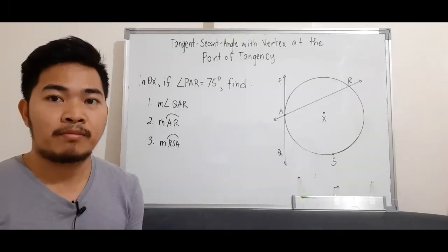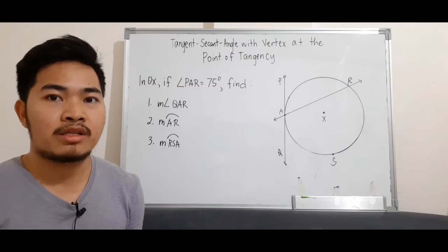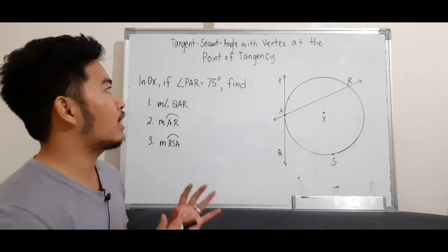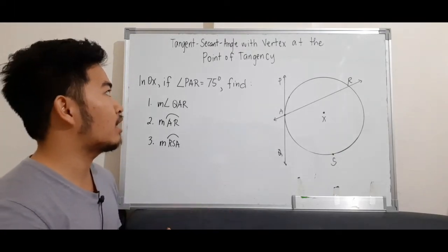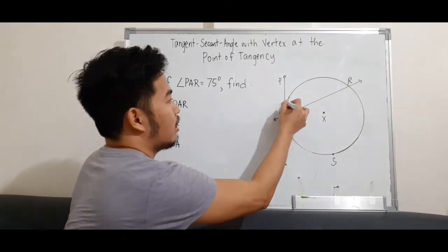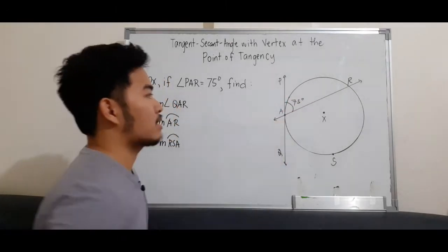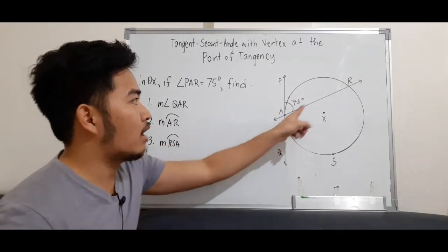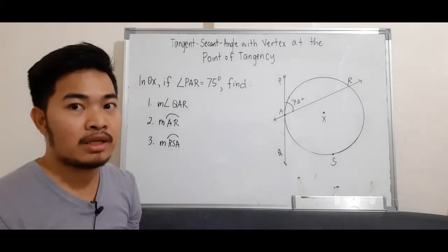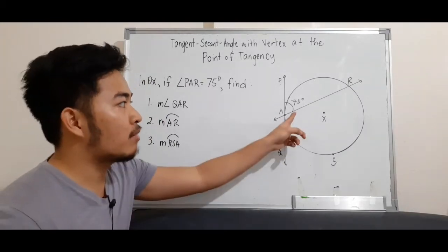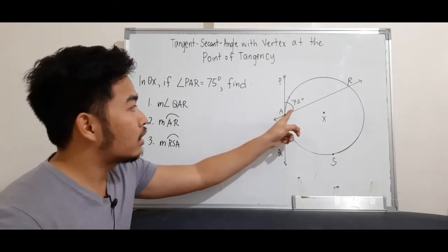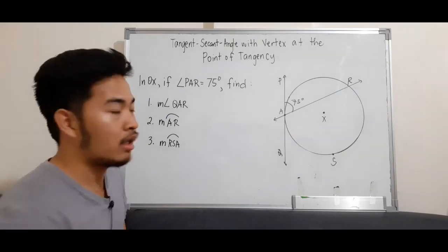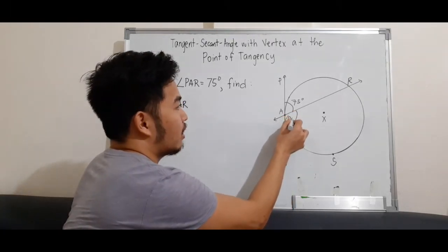Let's have the first problem. In circle X, if angle PAR is equal to 75 degrees, find the measure of the following arcs and angles. First, we place the measurement of the given angle, which is 75 degrees, for angle PAR. We know that angle PAR and angle QAR are supplementary, with their sum equal to 180 degrees. If the sum is 180 degrees and one angle is 75 degrees, the measure of angle QAR is 105 degrees.